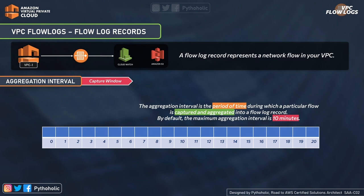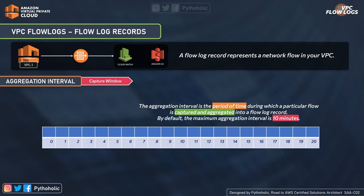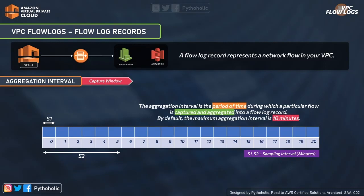For VPC flow logs, the maximum aggregation interval is 10 minutes. Basically, your aggregation is a collection of timeframes, and in that timeframe your logs are being captured — that is why it is called a capture window. Aggregation is made of small time intervals called sampling intervals. The sampling interval is the distance or time between which measurements are taken or data is recorded. S1 has a sampling interval of one minute, and A1 has an aggregation interval of five minutes, collecting all log records in that capture window consisting of five sampling intervals.